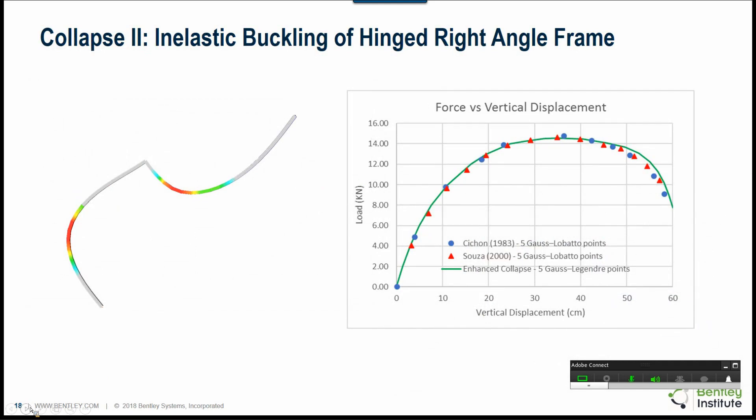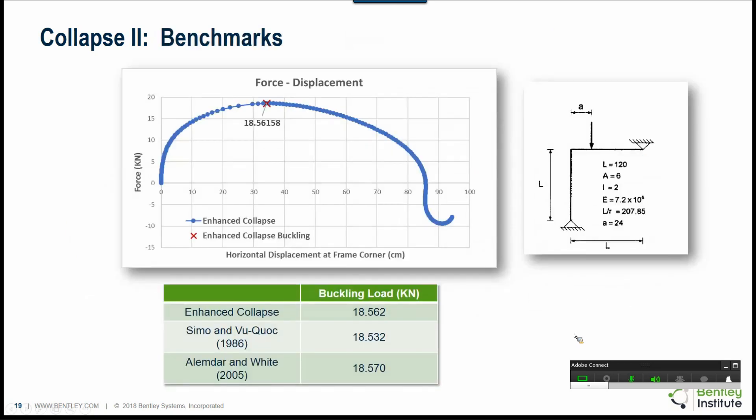Again, this is the same problem. However, this is the inelastic buckling and here again we have compared our results with various other solutions. The new collapse comes with many verification problems which are included in the manual and basically these problems are also included with the software in the samples directory. Here again, we have compared our results against other products or other theoretical predictions and again we see that the new collapse agrees very well with the other programs.